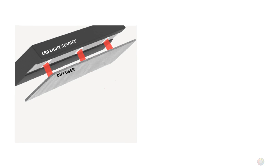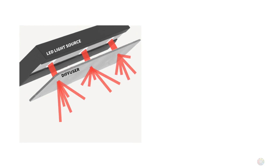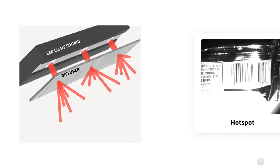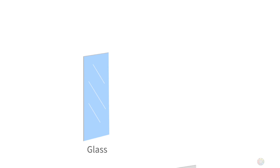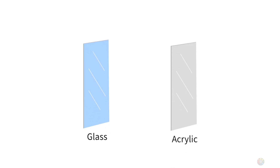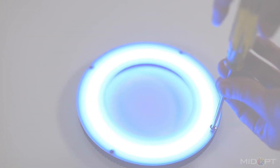Diffusers help scatter or spread the light to create uniform lighting. This helps to avoid concentrated areas of light commonly known as hotspots. Diffusers can be made from either glass or acrylic and are mounted to the light source.